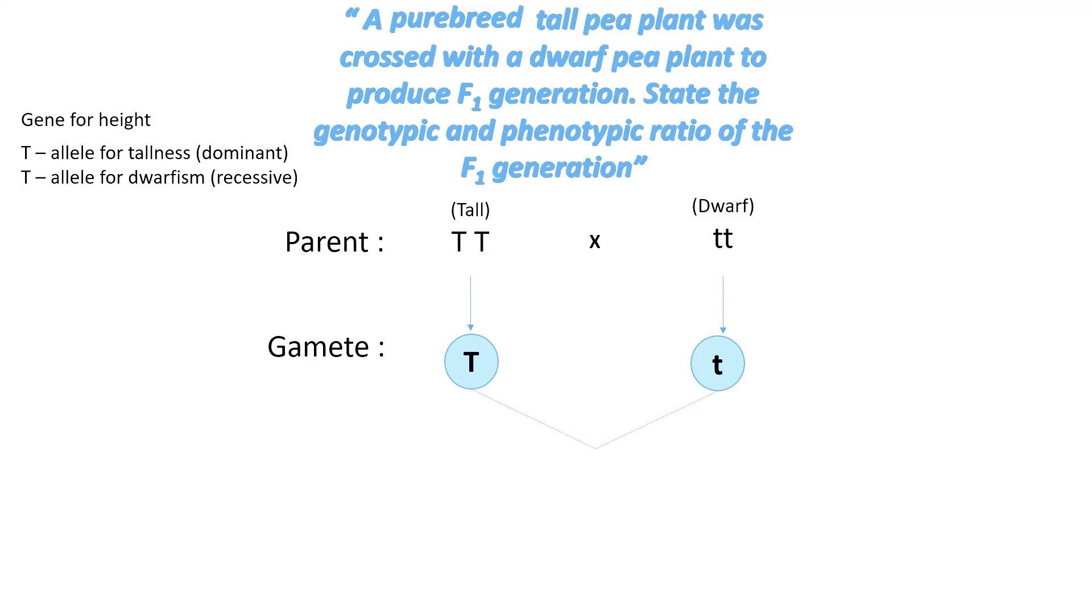Fertilization will bring the allele from each parent together. In this case, only one type of offspring will be produced. All will have capital T, small t, or heterozygous genotype, and tall phenotype.